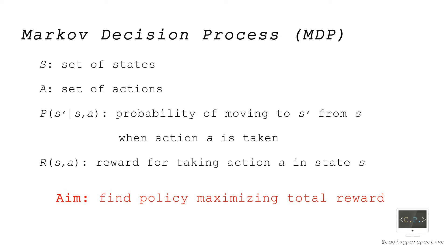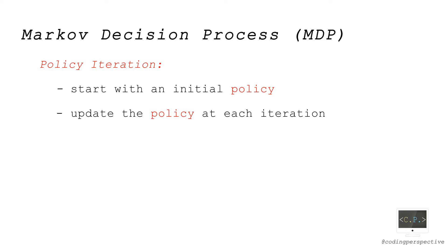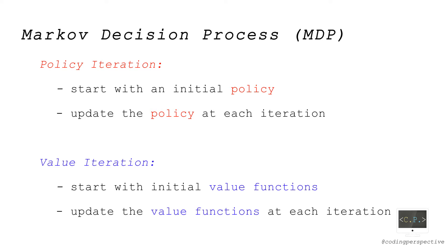To find the optimal policy, we will use the policy iteration algorithm. In policy iteration, starting with an initial policy, we find the optimal policy by iteratively updating it until it converges. In contrast, in the value iteration algorithm, starting with initial value functions, we find the optimal value functions by iteratively updating them until they converge. This is the main difference between the two algorithms.